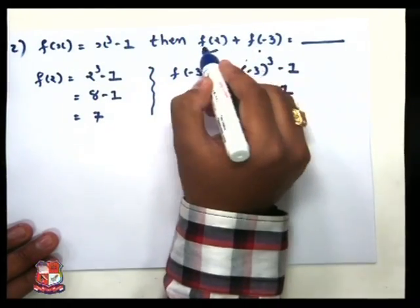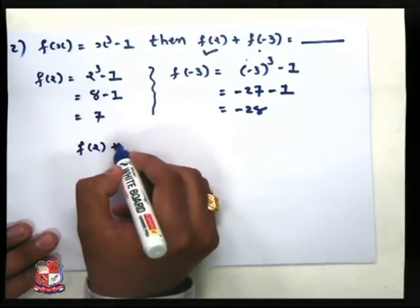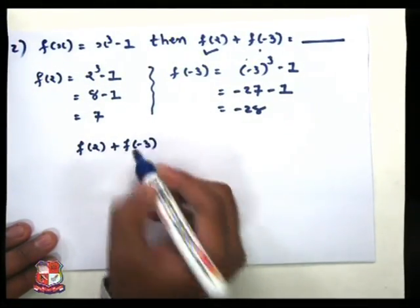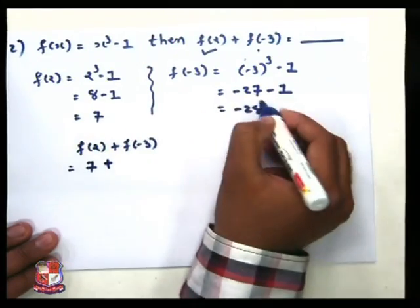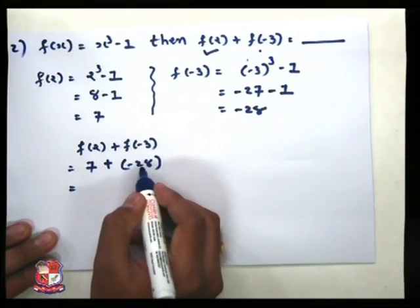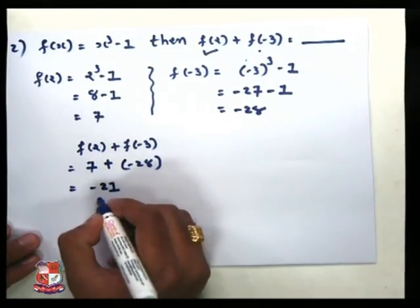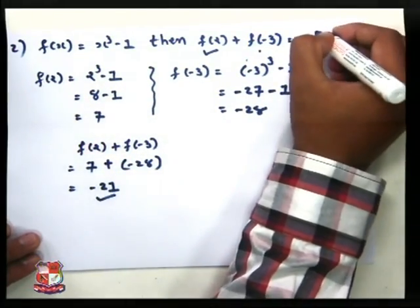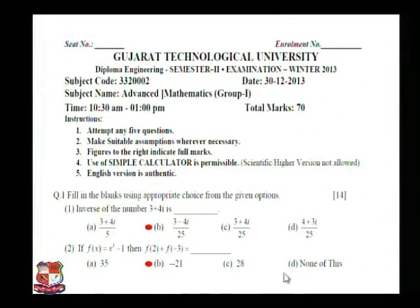Now we want to add f of 2 plus f of minus 3. So the final answer is f of 2 plus f of minus 3 equals 7 plus minus 28, which is nothing but minus 21. So minus 21 is our final answer. In the question paper, option B is equal to minus 21.